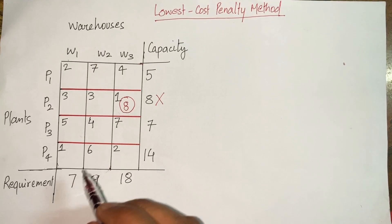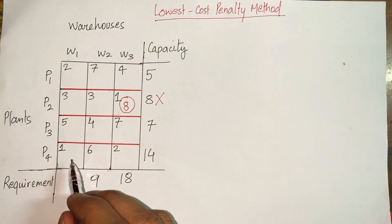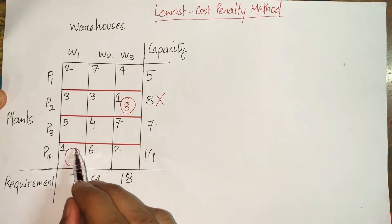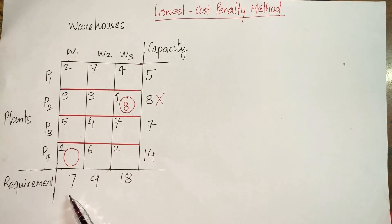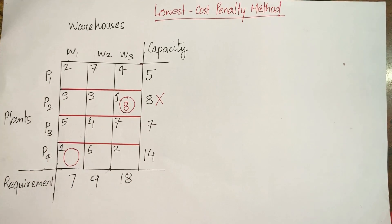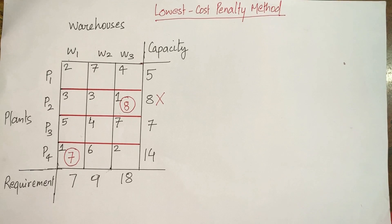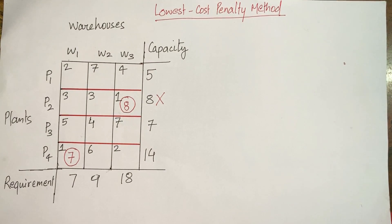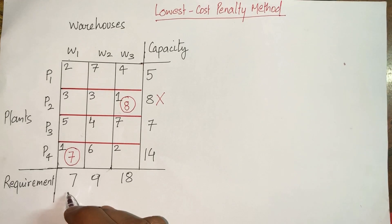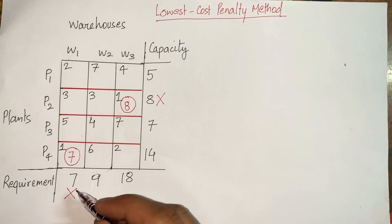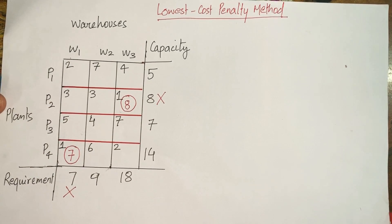Step 2: search again for the minimum cost cell, which is once again cost 1. The next allocation goes to plant P4 and warehouse W1. Warehouse W1 requires 7 units while P4 has 14 units capacity, but since W1 only requires 7, I ship only 7 units. All 7 units required at warehouse W1 were shipped by plant P4, so W1 is now fully satisfied.